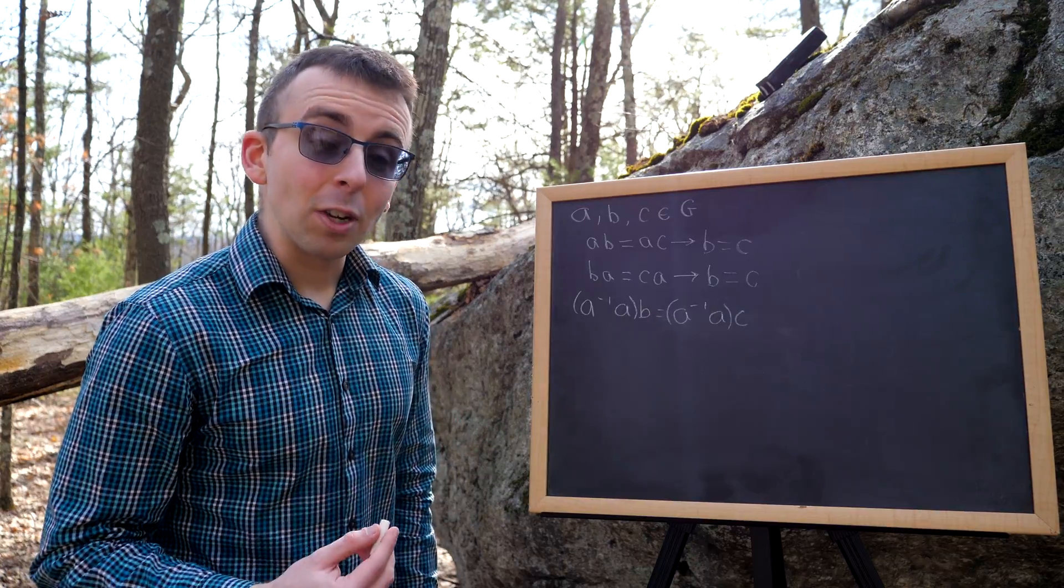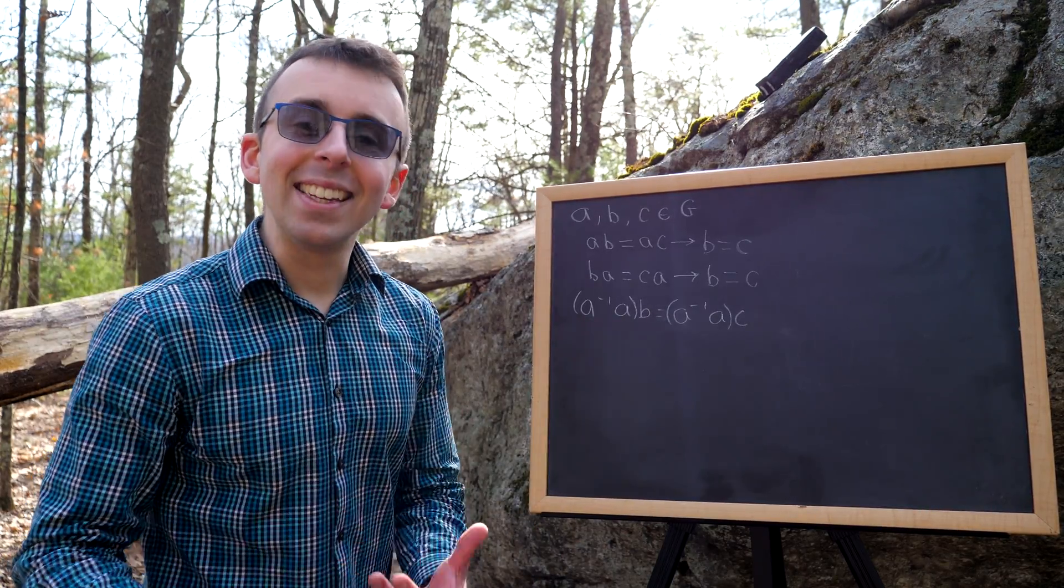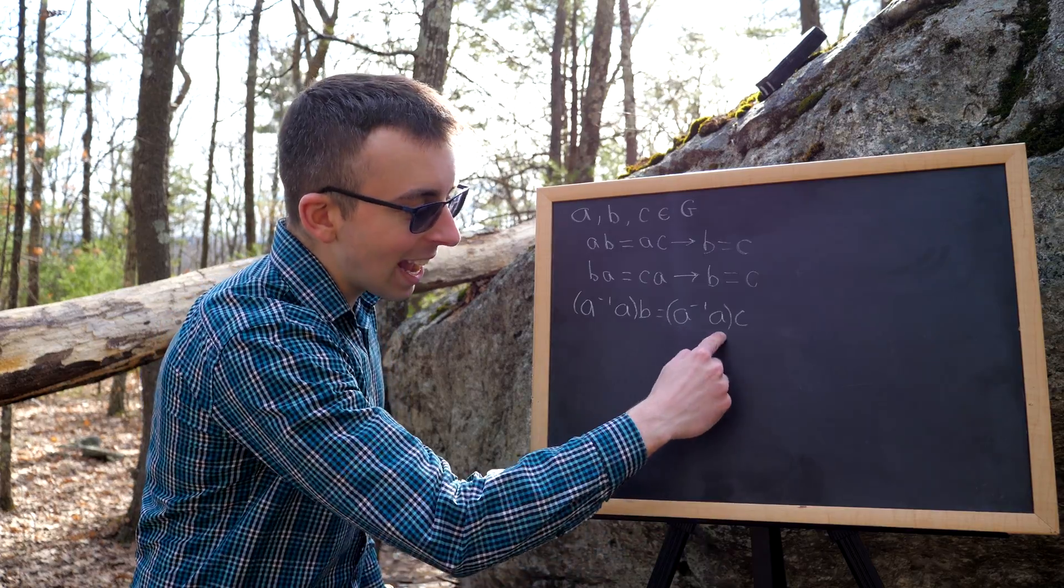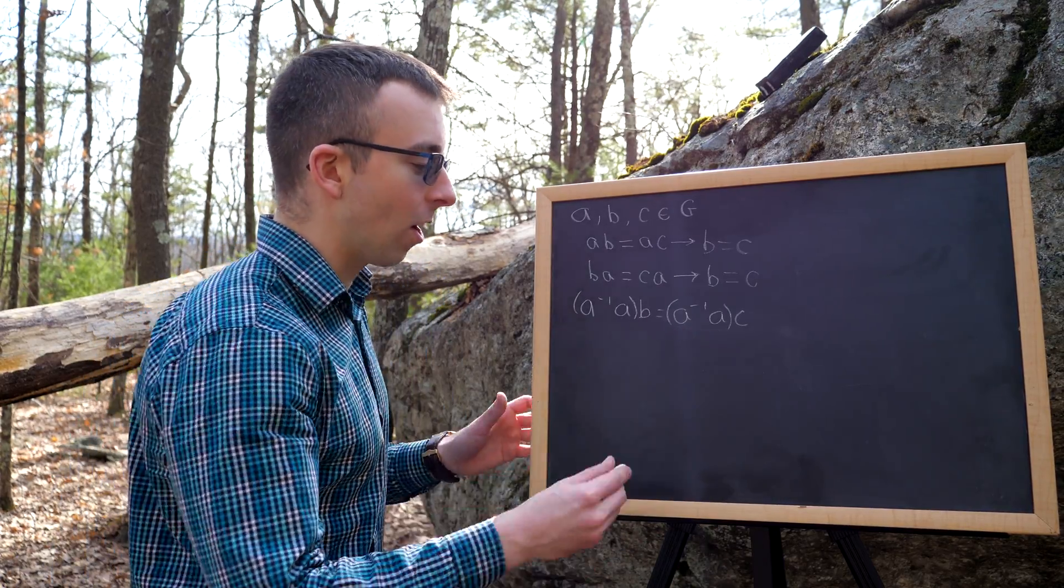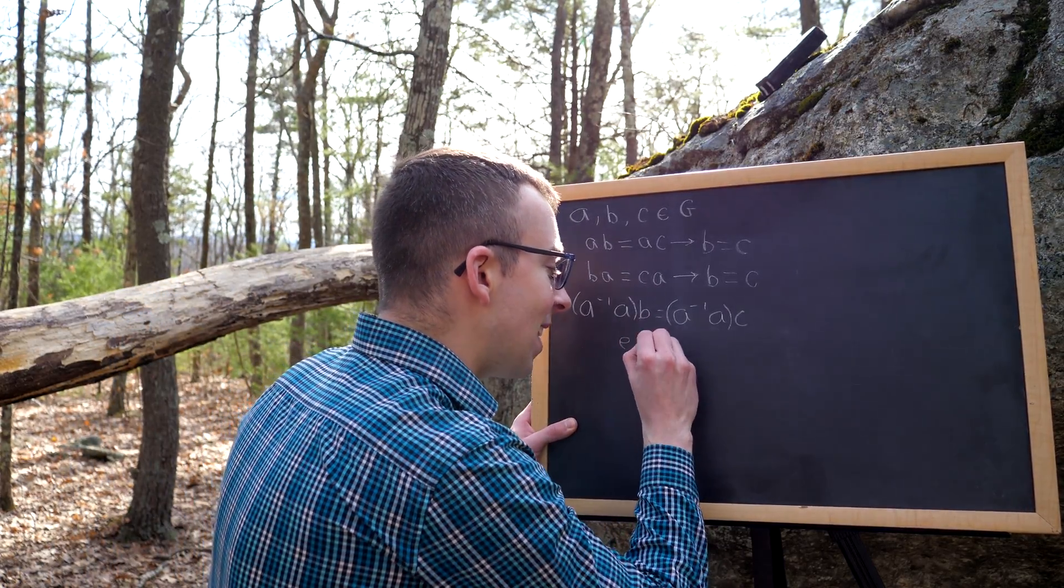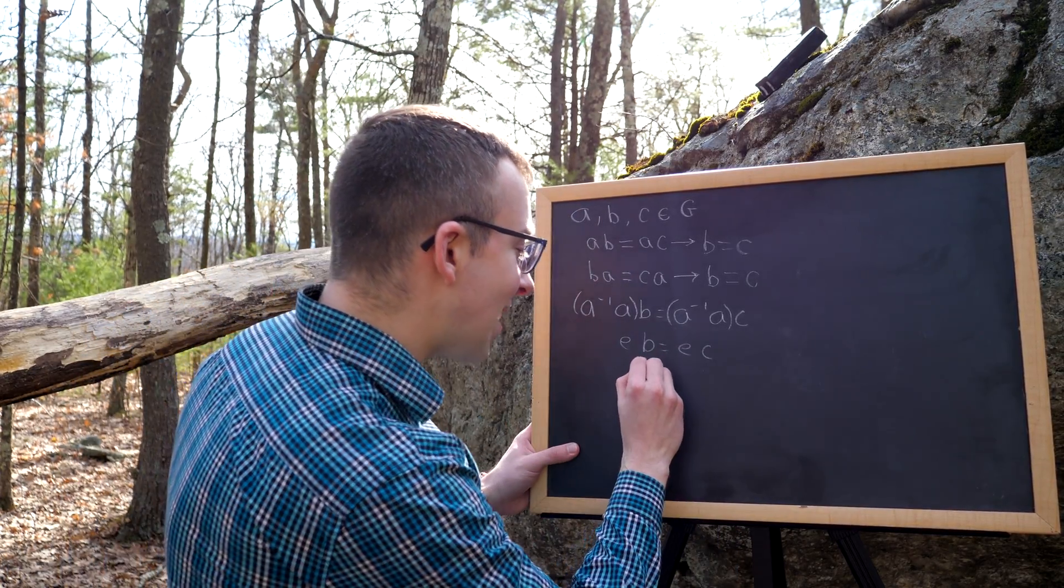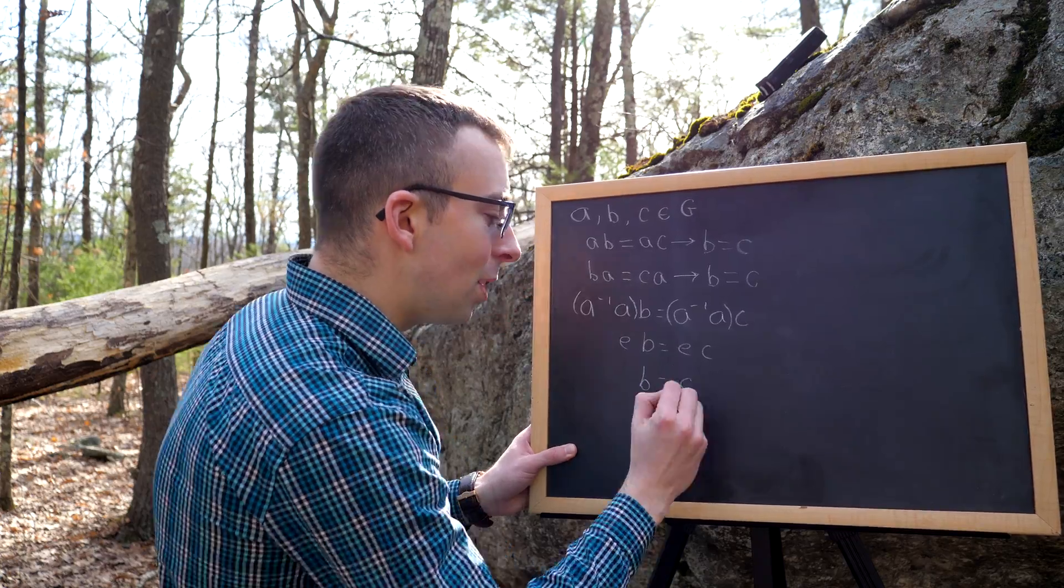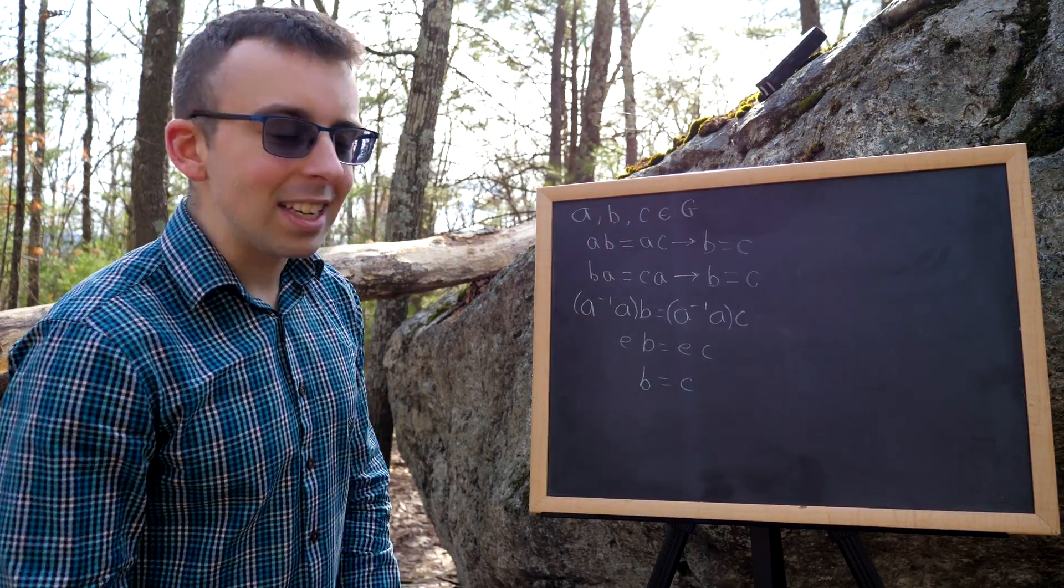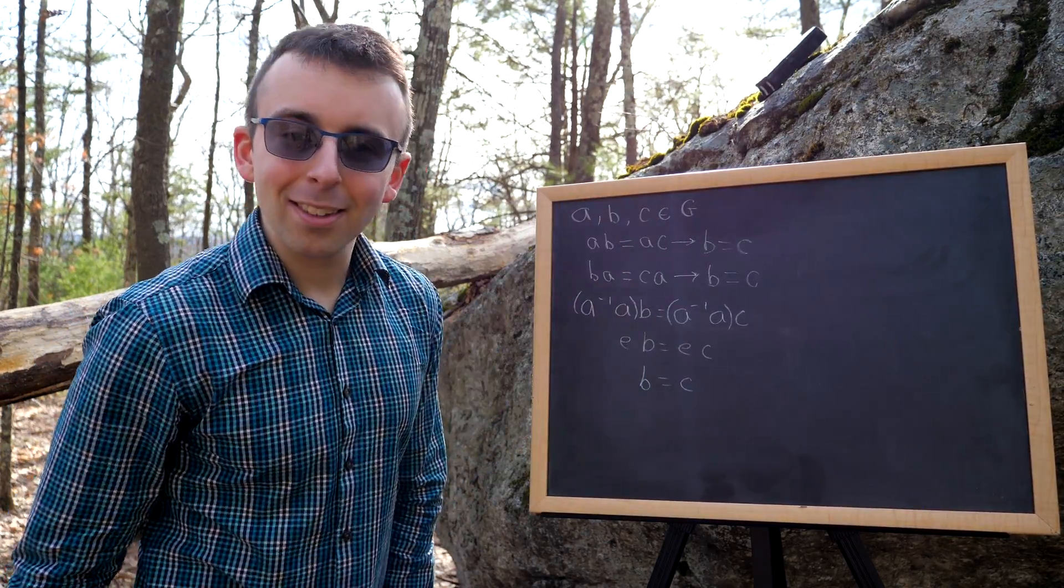By definition of inverse elements, of course, this is going to be the identity, which we'll call E, and this will be the identity, which we'll call E. Thus, we have EB equals EC, and then by definition of identity element, we conclude that B is equal to C. So indeed, we can cancel elements on the left.